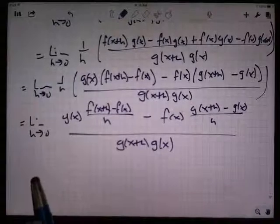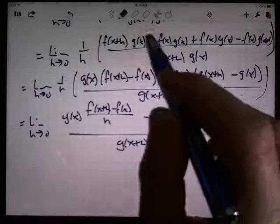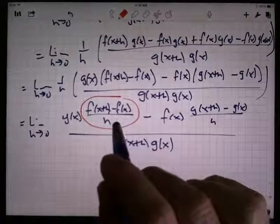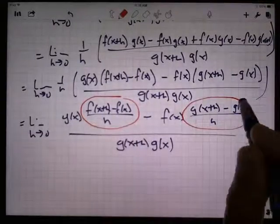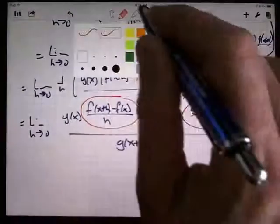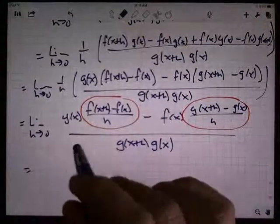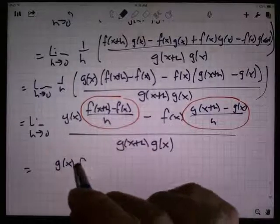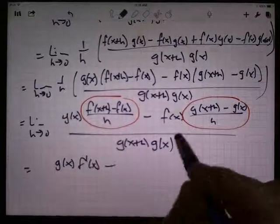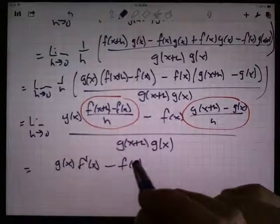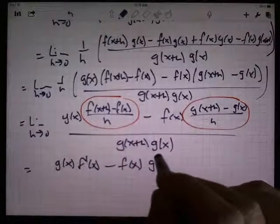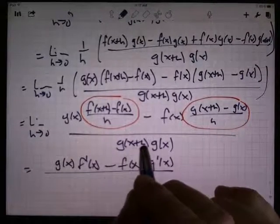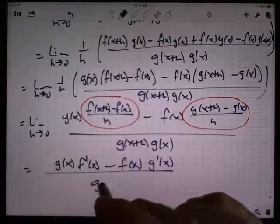Now maybe you can see what's happening here. As h goes to 0, I've got this thing right here which is the derivative of f, and this thing which is the derivative of g. When we take this limit, that's not dependent on h, so that's just g of x. But this turns into f prime of x. This f doesn't depend on h, so it stays f. And all this is the derivative of g. On the bottom, you have h going to 0, so g of x plus 0 is g of x, and you've got g squared on the bottom.